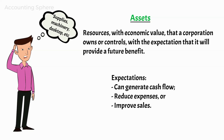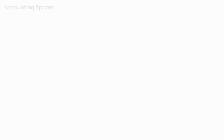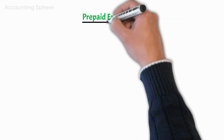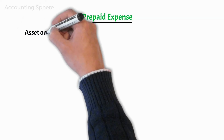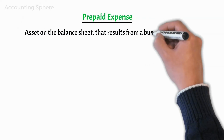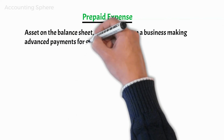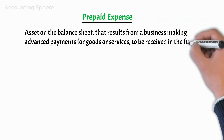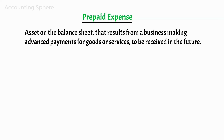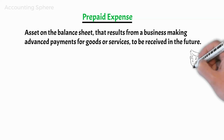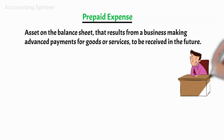Now let's add the situation where Fast Print pays a premium on February 1st for the usage of a design software service for 12 months. This is commonly known as a prepaid expense. A prepaid expense is an asset on the balance sheet that results from a business making advanced payments for goods or services to be received in the future. Prepaid expenses are initially recorded as assets, but their value is expensed over time onto the income statement. Goods or services of this nature cannot be expensed immediately because the expense would not match with the benefit incurred over time from using the asset.